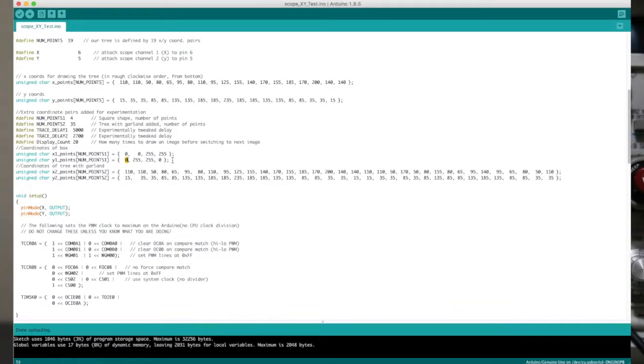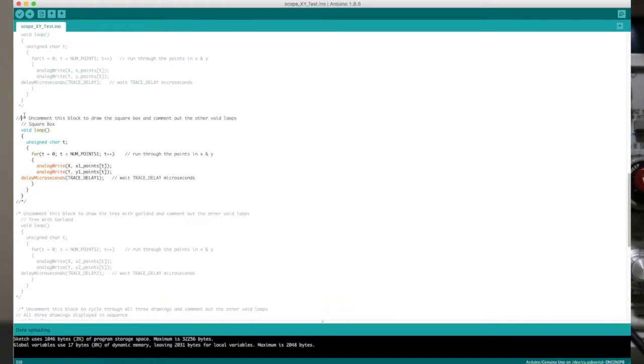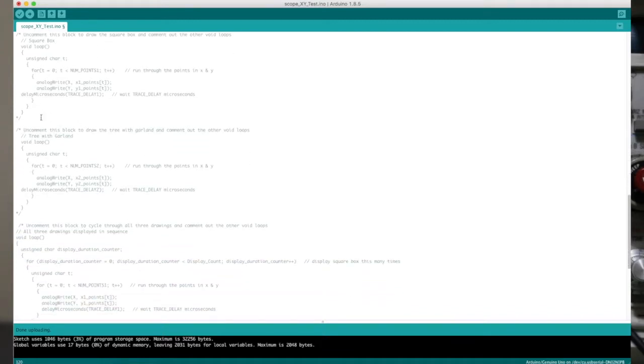Understanding how the XY mode now works with voltages on the PWM outputs between approximately 0 and 5 volts, let's see how the Christmas tree with the extra decorations works. I'm going to comment out the one that draws a square box and bring in the one that draws the fancy tree by commenting out the bigger comment block command so that this loop is now active. Let's download this and see how this works.